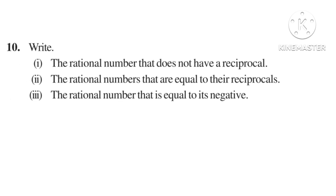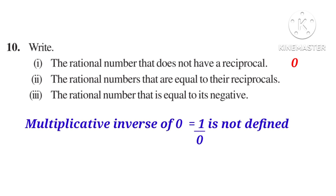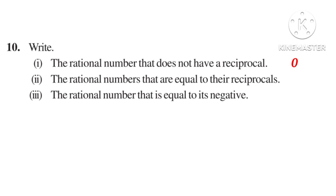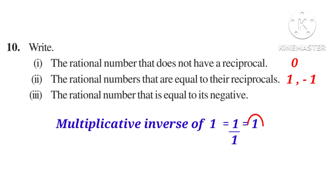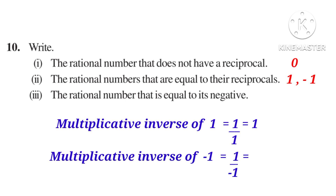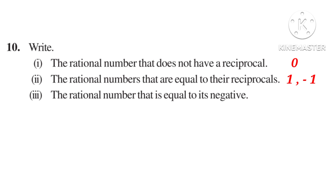Now, problem 10. Number 1: the rational number that does not have a reciprocal is 0, because 1 by 0 is not defined. Number 2: the rational numbers that are equal to their reciprocals are 1 and minus 1. Because multiplicative inverse of 1 is 1 by 1 which equals 1, and multiplicative inverse of minus 1 is 1 by minus 1 which also equals minus 1. Number 3: the rational number that is equal to its negative is only 0.